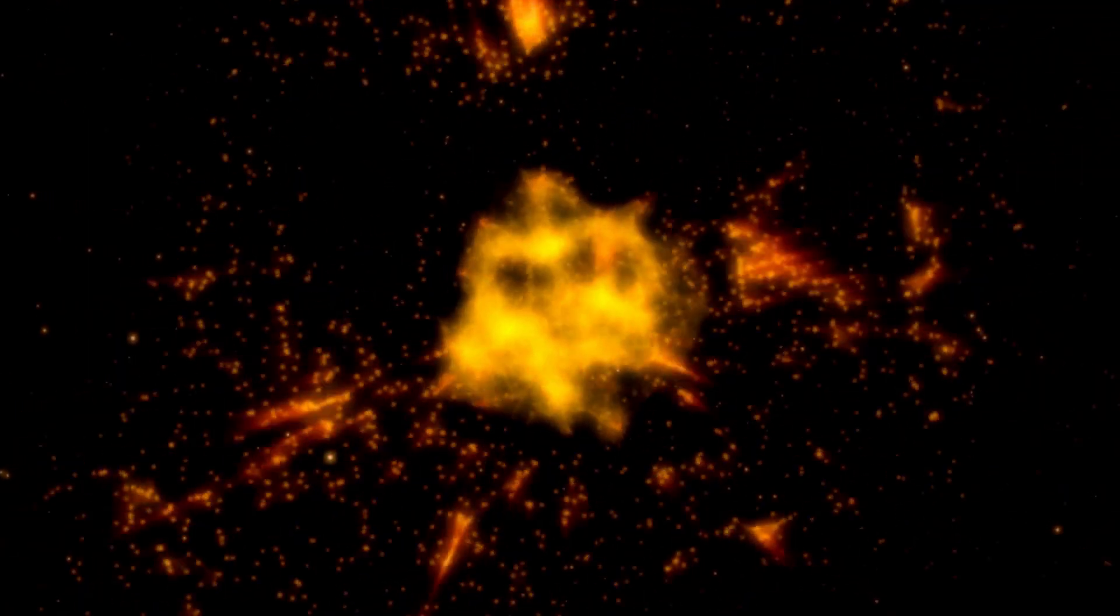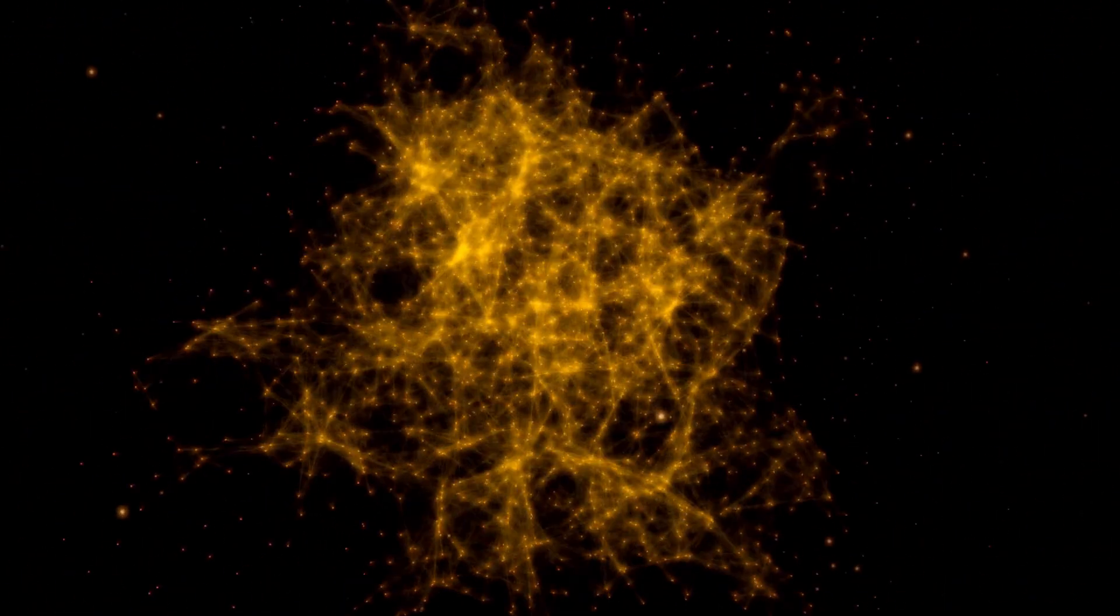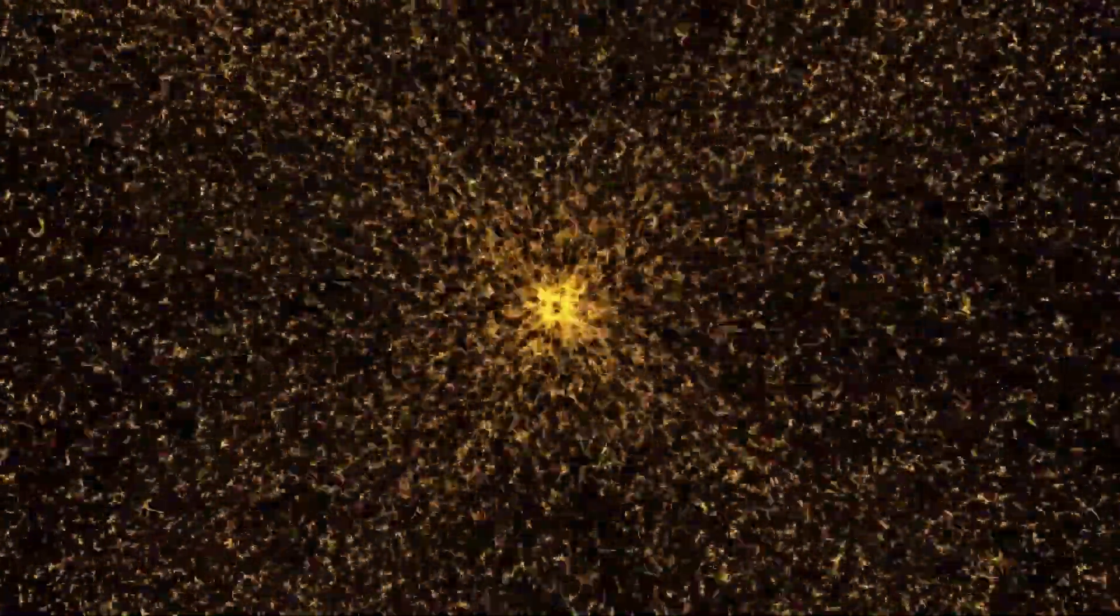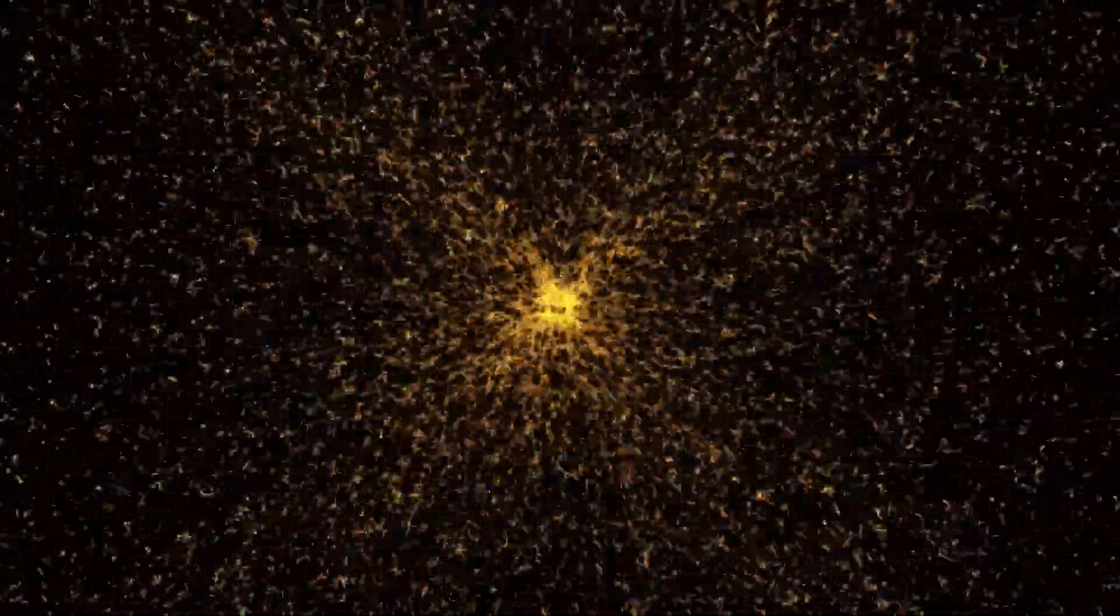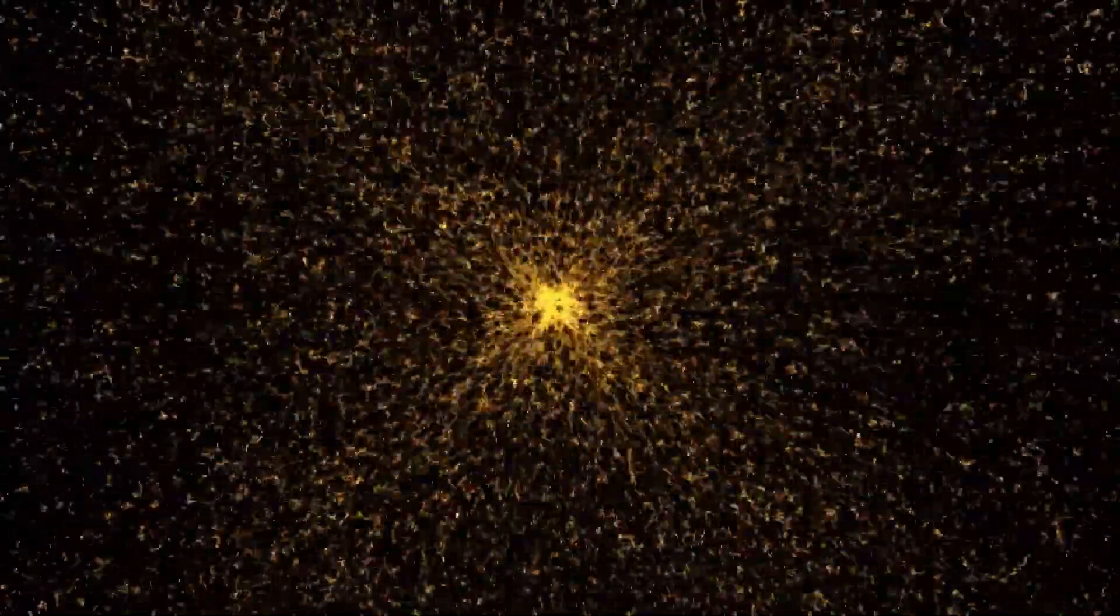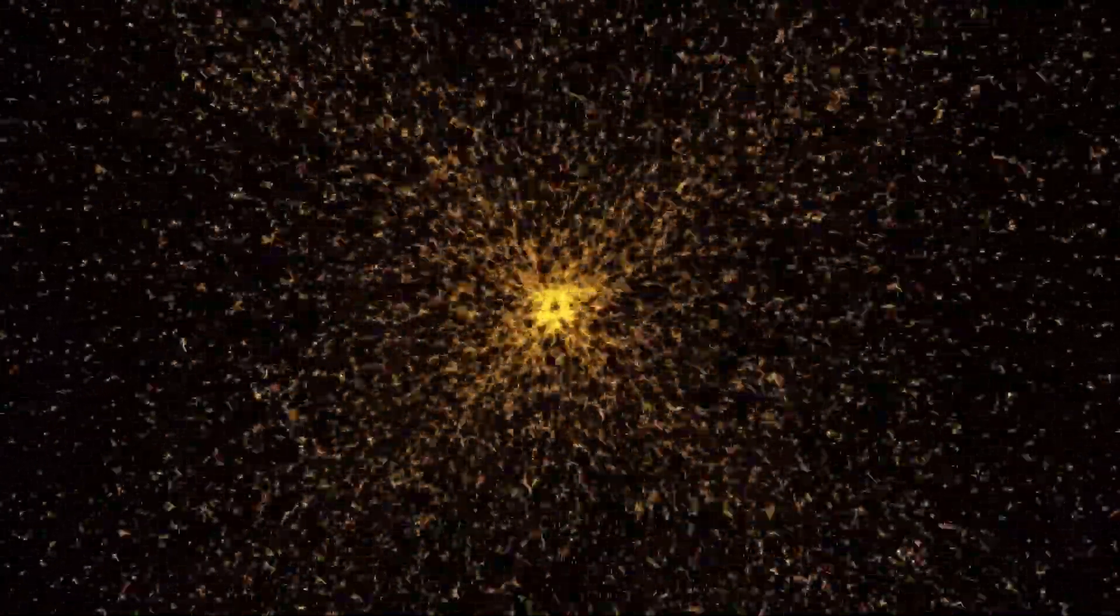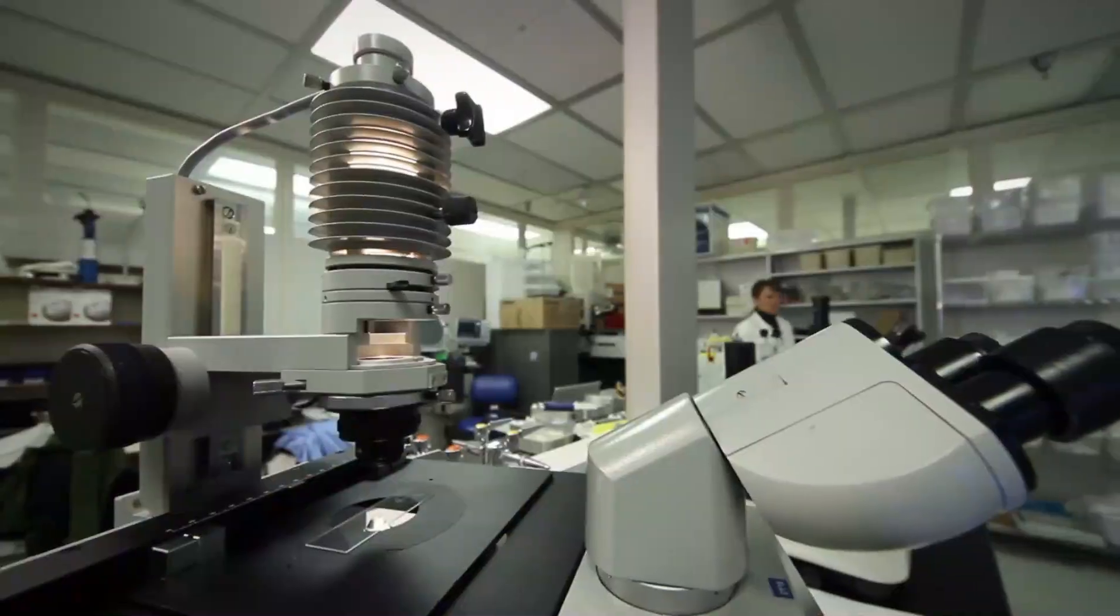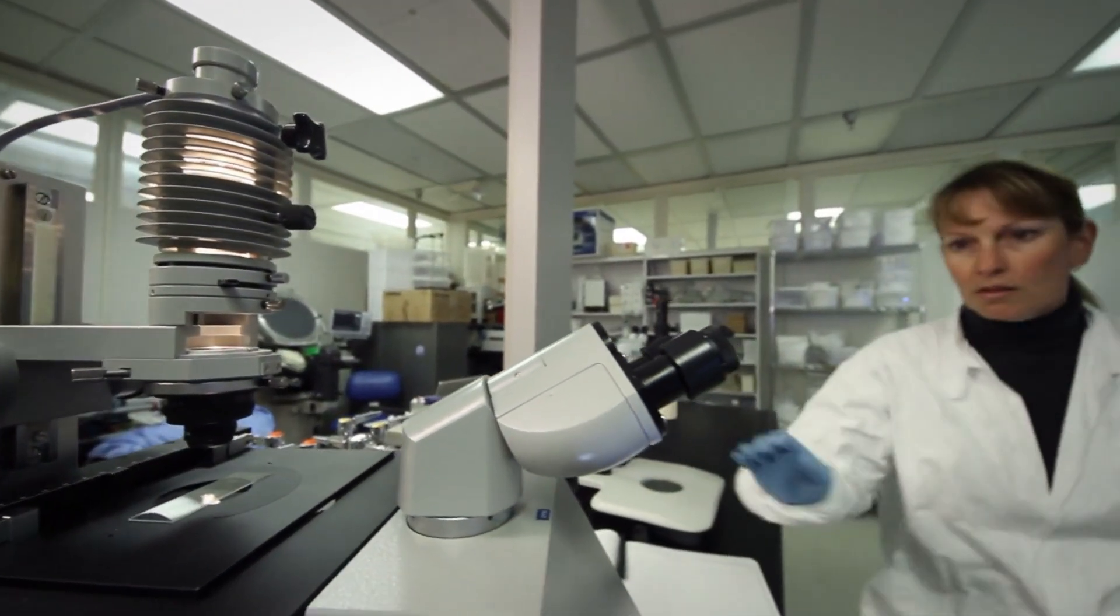If Betelgeuse were to go supernova, it would be a celestial event of extraordinary magnitude. Its explosion would be so bright that it could be seen during the daytime for weeks or even months. It would temporarily rival the brightness of the full moon and become the most luminous object in the sky. Fortunately, Betelgeuse is far enough from Earth that even a powerful supernova wouldn't pose a threat to our planet. But if such an event were to happen closer to home, the results could be devastating.